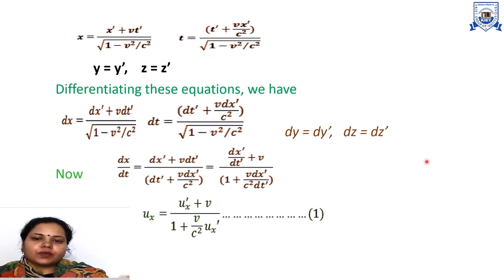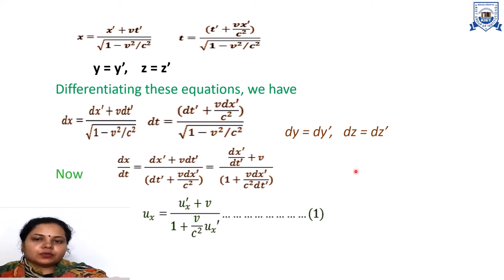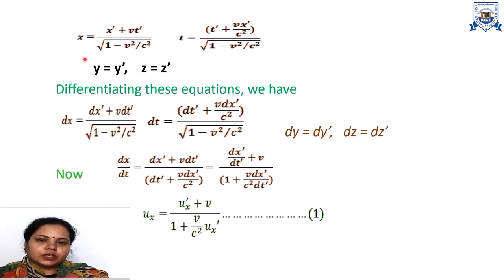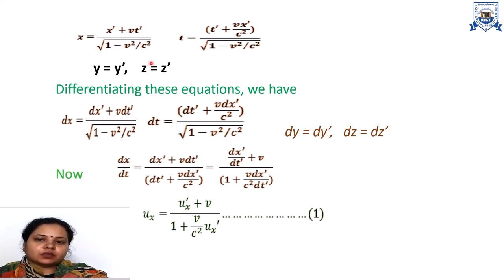We want to find out the equations relating the x, y, z components of velocity with respect to observer O-dash. From the inverse Lorentz transformation equations: x = (x-dash + v·t-dash) / √(1 − v²/c²), t = (t-dash + v·x-dash/c²) / √(1 − v²/c²), y = y-dash, and z = z-dash.